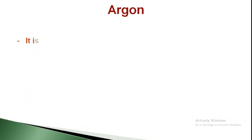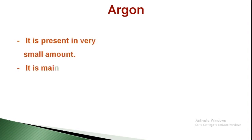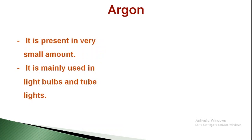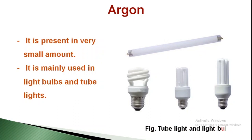Argon. It is present in a very small amount. It is mainly used in light bulbs and tube lights. Argon is present in very less amount in our nature, but it is very useful as it is used in tube lights and bulbs. Without argon, we won't be able to light our night, as we need argon as a very important component. Argon is present in our homes because it is present in tube lights and bulbs.